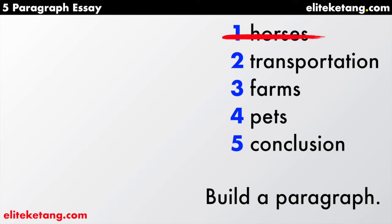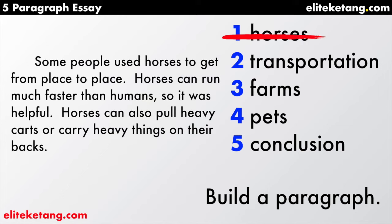Next is transportation — this is one reason I think my answer is right. I will build a paragraph around transportation. 'Some people used horses to get from place to place. Horses can run much faster than humans, so it was helpful. Horses can also pull heavy carts or carry heavy things on their backs.' These are different reasons that transportation and horses go together. Don't forget to indent. Transportation, paragraph two, is finished. Just three sentences is an okay paragraph.